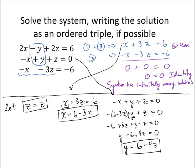So putting that all together, what I can say is the solution takes the form 6 minus 3z, 6 minus 4z, z. And this tells us all of the solutions of this system.